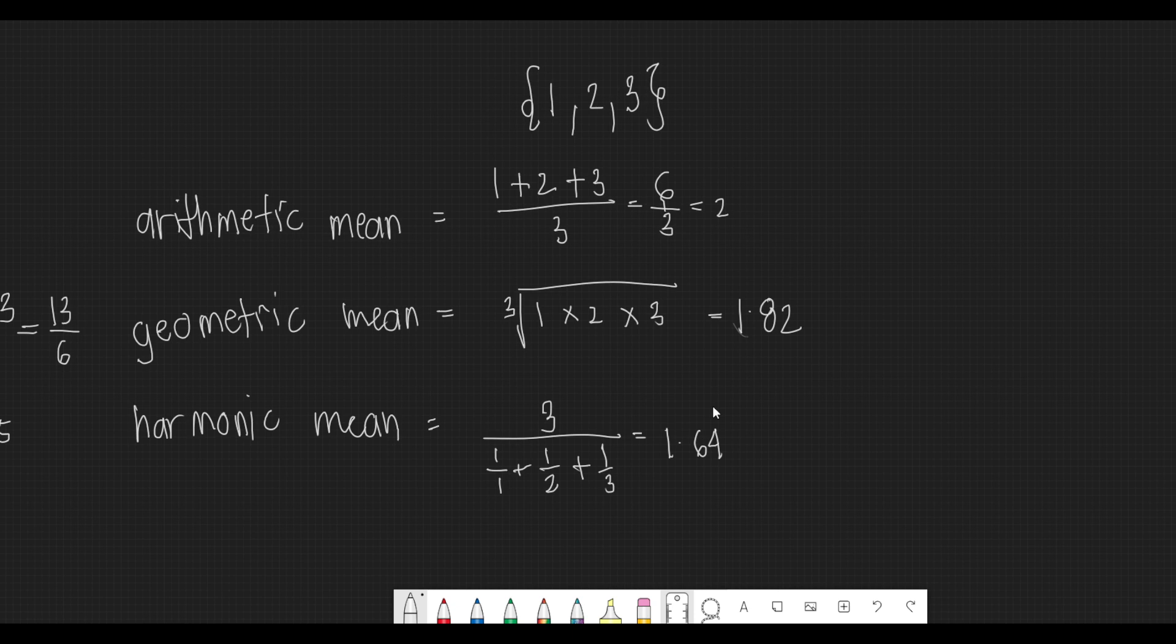For geometric mean, we need to multiply all the numbers and get the root according to the number of data. And for harmonic mean, we just need to flip our computations for arithmetic mean. So if you have questions, comment them below.